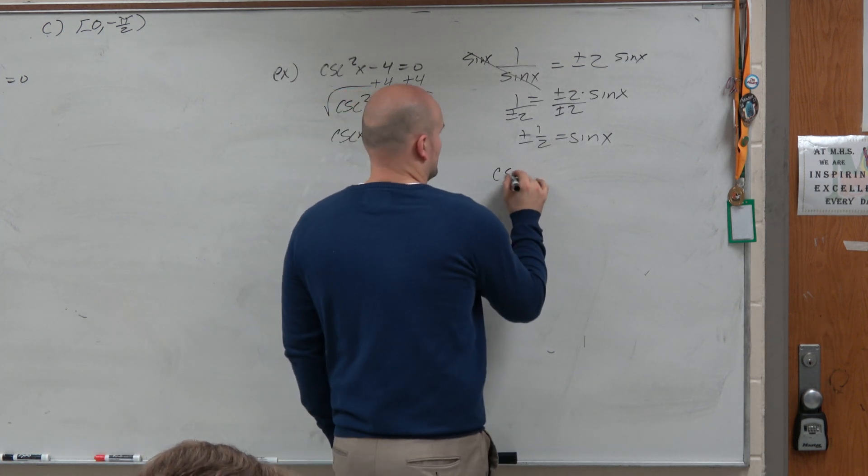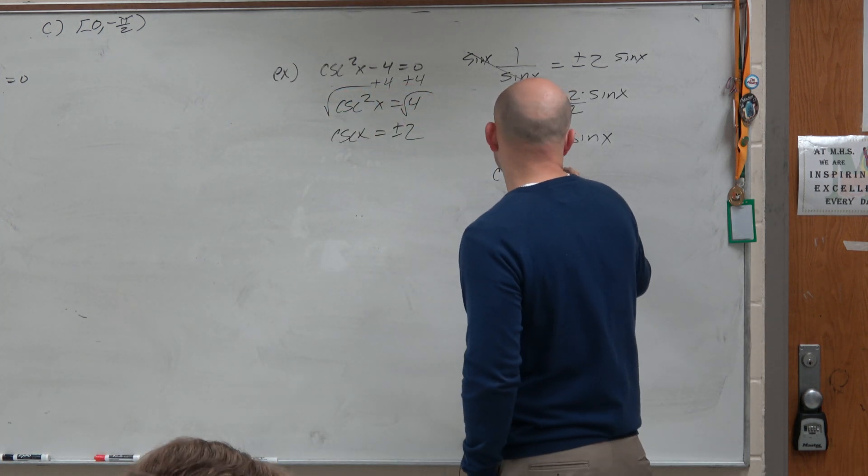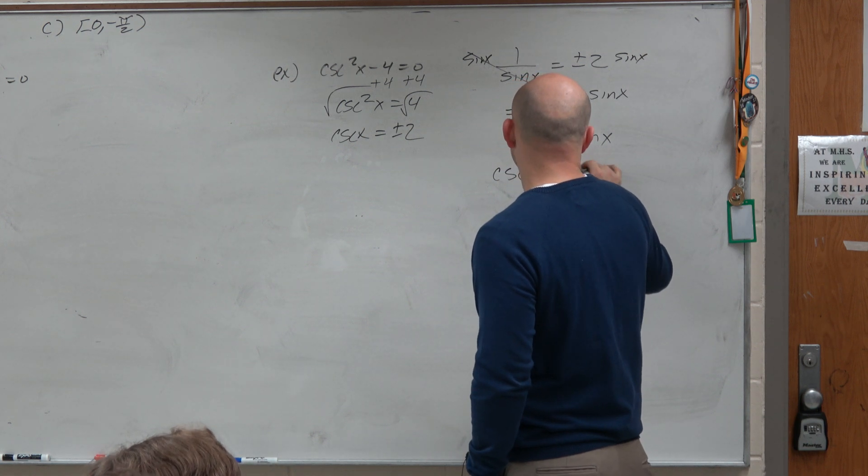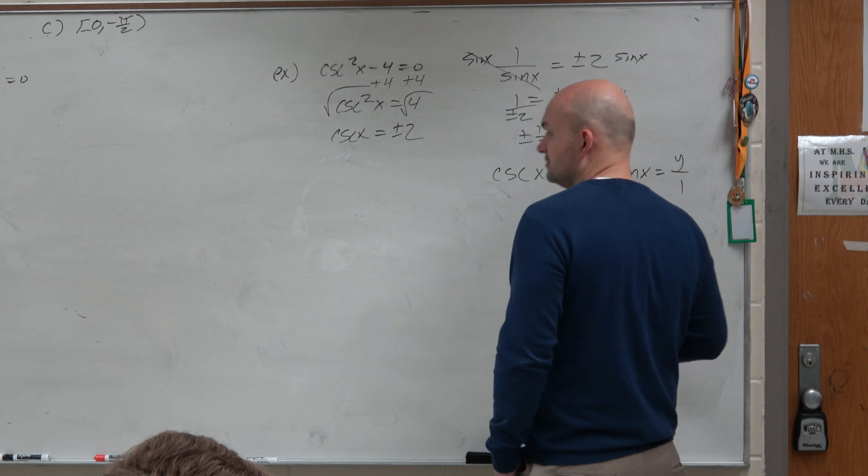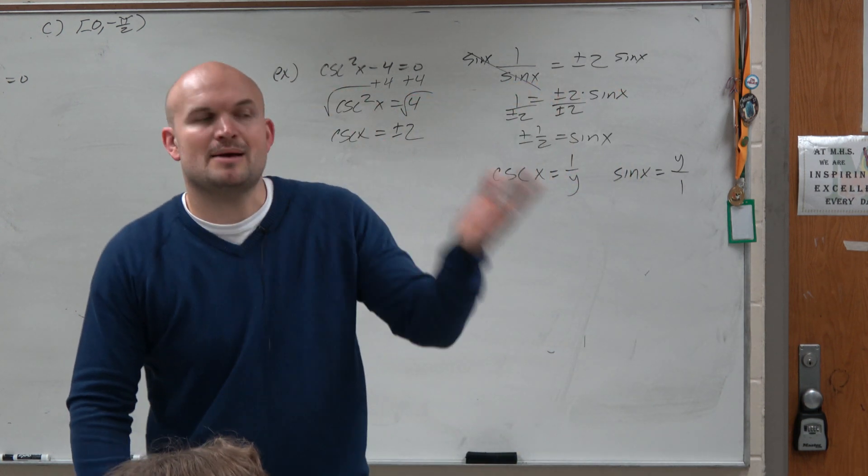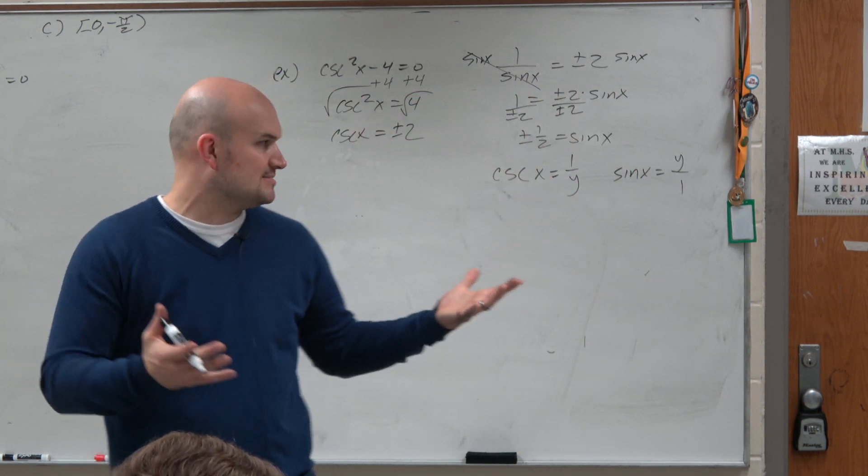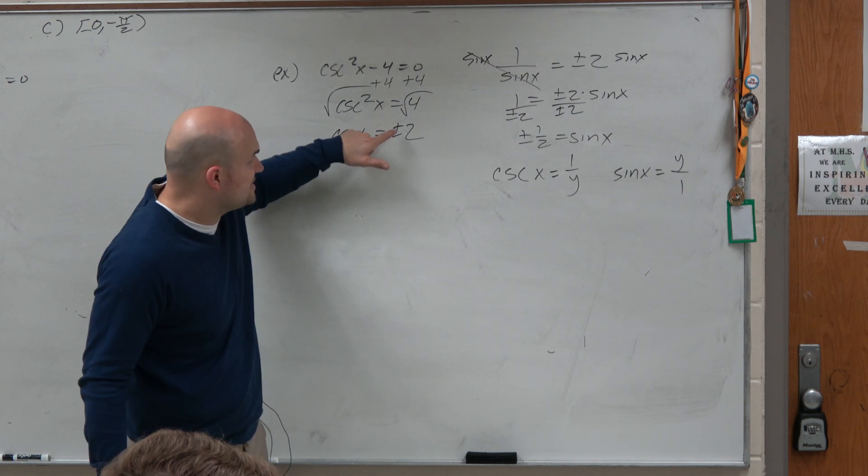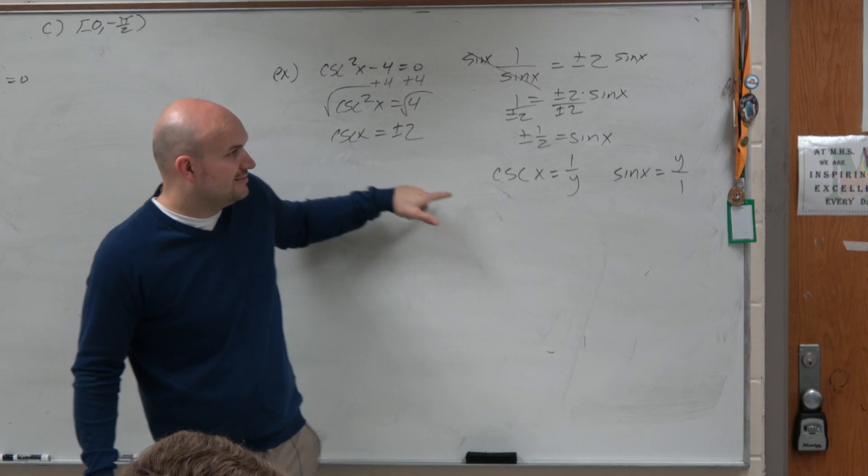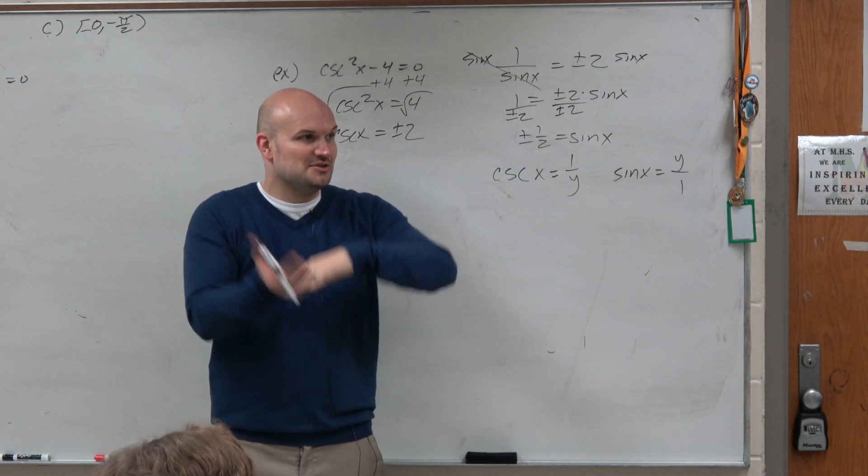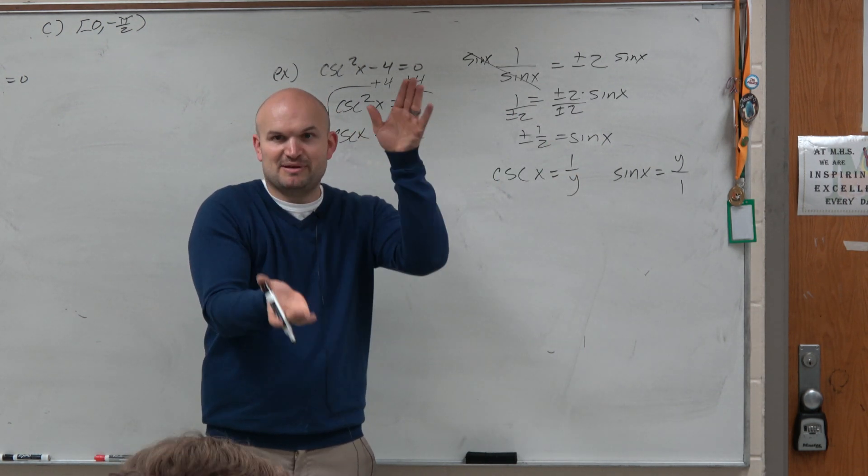Another way to think about it. Cosecant of x is 1 over y. Sine of x is y over 1. Or opposite over hypotenuse, hypotenuse over opposite, right? Same thing. Doesn't matter. So if cosecant is plus or minus 2 over 1, then that means sine is going to be plus or minus. You just flip it, right? Which would be 1 half.